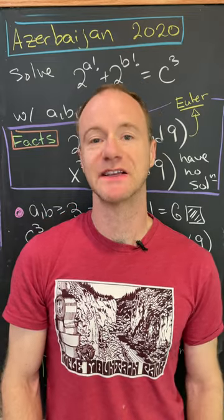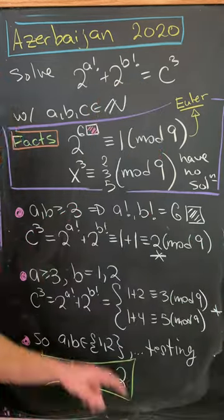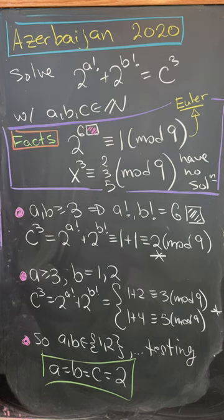Here we've got a nice problem from the 2020 Azerbaijan Math Olympiad. So our goal is to solve two to the a factorial plus two to the b factorial equals c cubed.